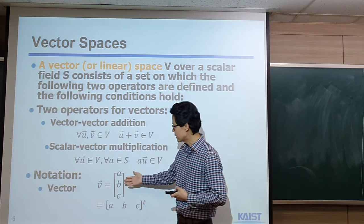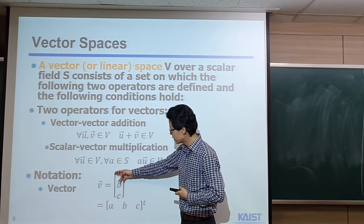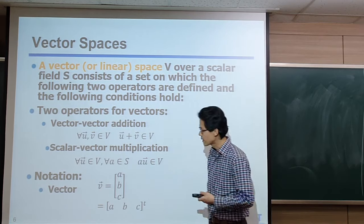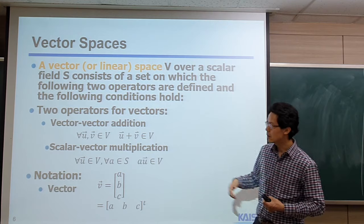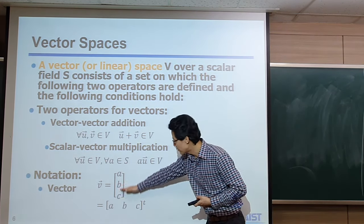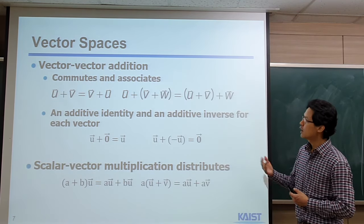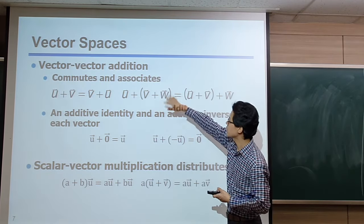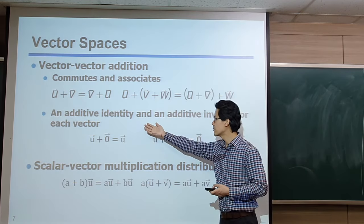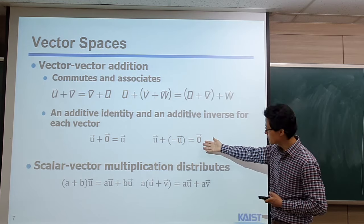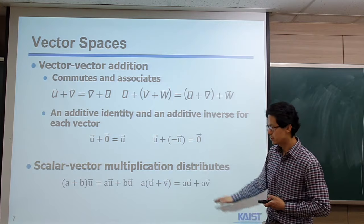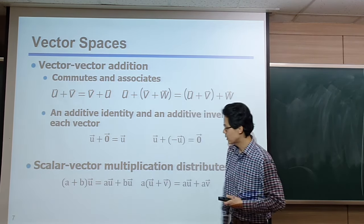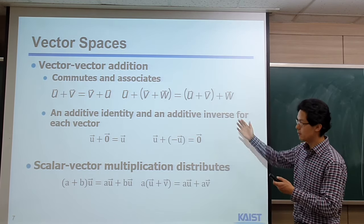In this class, I will use this vector notation. The vector of V is represented as a column-major tuple (A, B, C). Sometimes I use this notation with a transpose. Since I will define many other notations on top of this vector notation, you should be aware that I use column-major ordering. The vector-vector addition is commutative and associative. We can define the additive identity, and the additive inverse. The scalar-vector multiplication has to distribute, so given a summation of a scalar and a vector, we can distribute that scalar term.